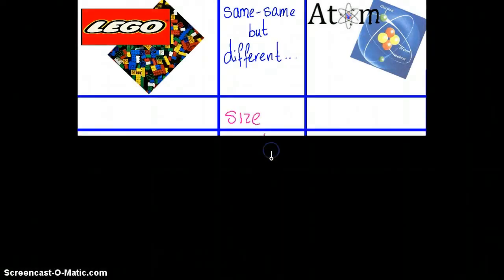The first row is about size. Well, Lego blocks we know are quite big. We can see them easily, we can pick them up easily. What about atoms? How many atoms do you think could fit on a single full stop? Well, it's going to be more than 100. It is, in fact, about 100 billion.